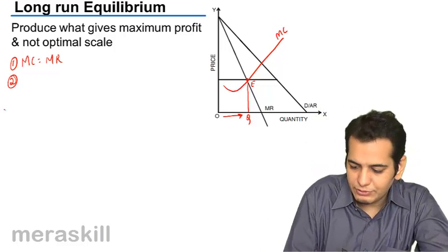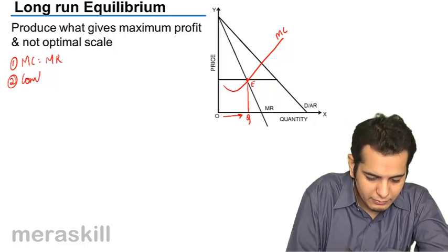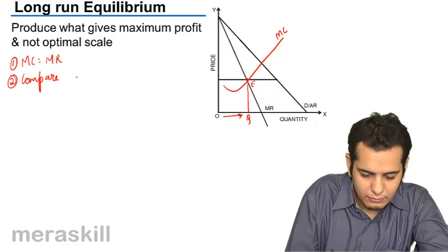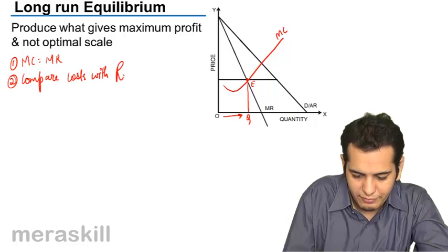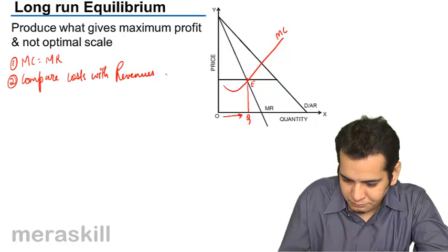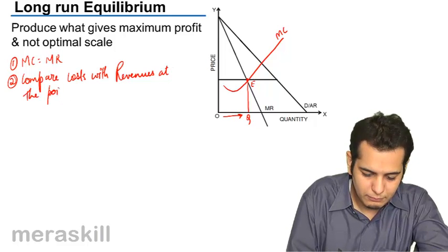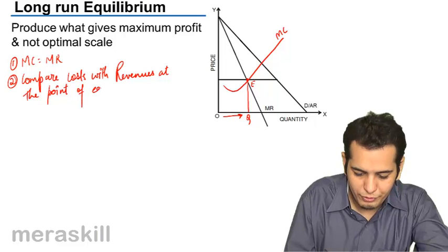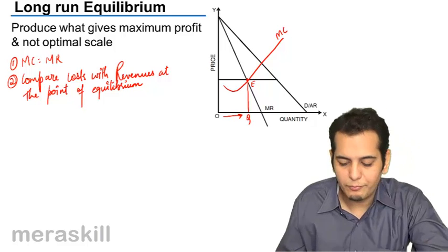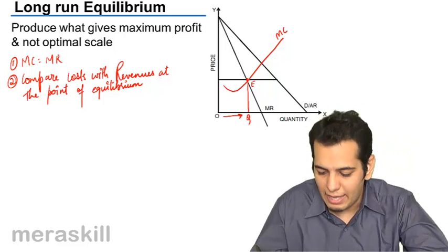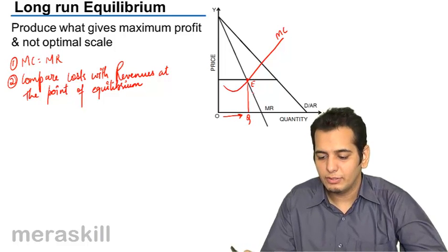The second condition is compare costs with revenues at the point of equilibrium. I have the point of equilibrium. Now I have to compare the cost with the revenues.